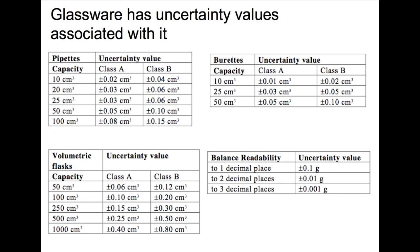It will also tell you what temperature your glassware is calibrated to work at. The other uncertainty values we can use are those of balance readabilities — plus or minus one in the final digit that your balance reads to. So for a one decimal place balance, your uncertainty value is plus or minus 0.1 grams. We'll be coming back to use some of these values later on in calculations.